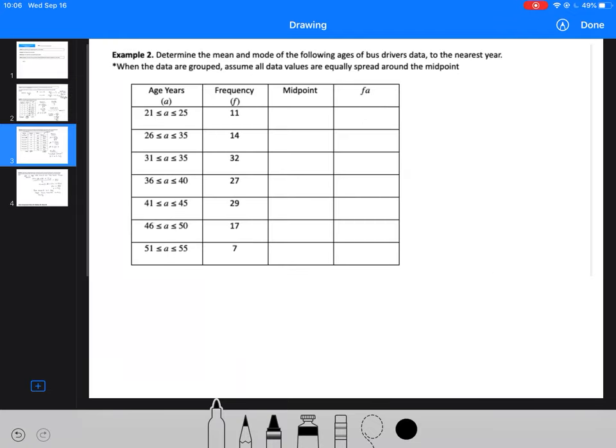Let's look at another example that has a grouped frequency or modal class, because your data that you're looking at has a range. We're going to look for the mean and mode of the following ages of bus driver data to the nearest year. One thing to remember is that when the data are grouped, assume all data values are equally spread out around the midpoint.